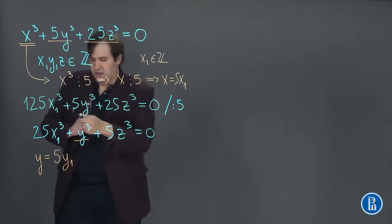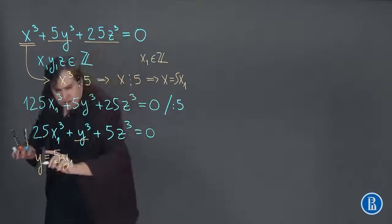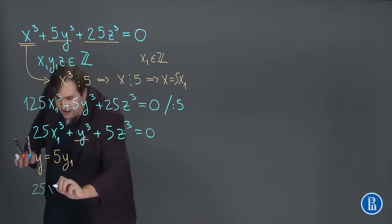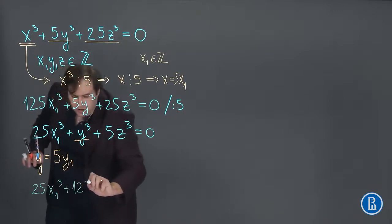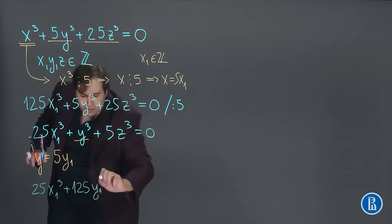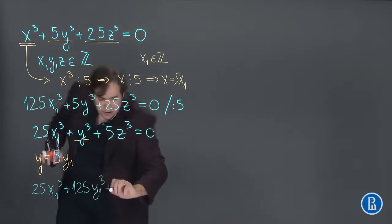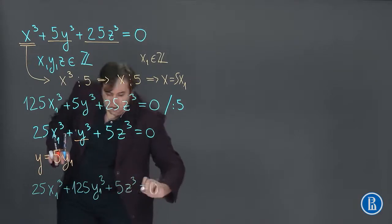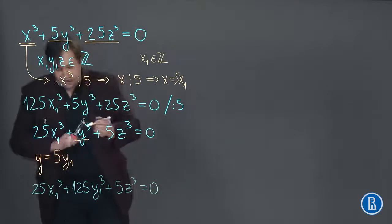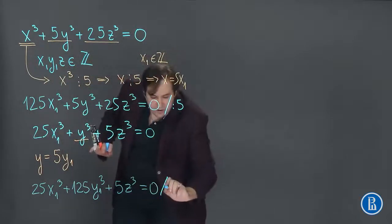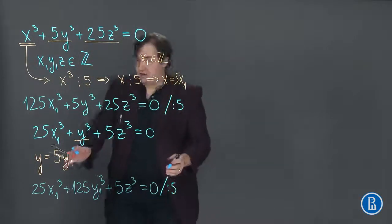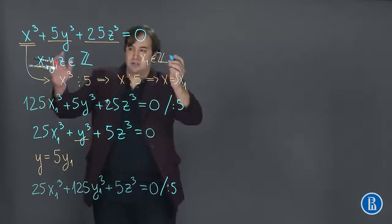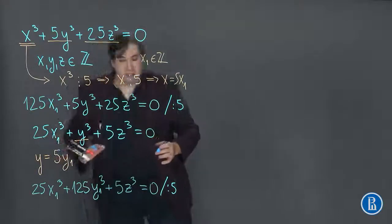And when we substitute and divide the equation by 5 we will obtain such equation. Well first substitute then divide. Substituting: 25x₁³ plus 125y₁³ plus 5z³ and all this should be equal to 0. And now indeed divide equation by 5.